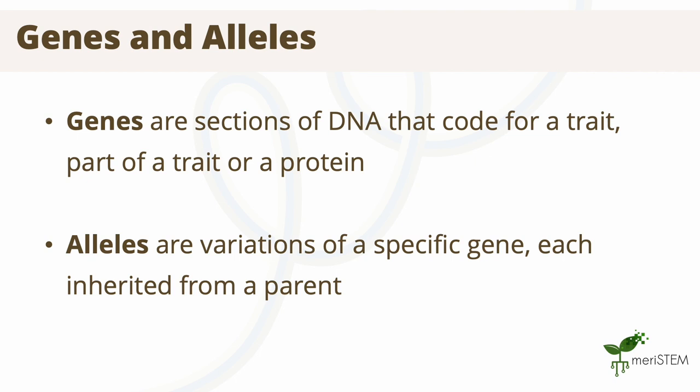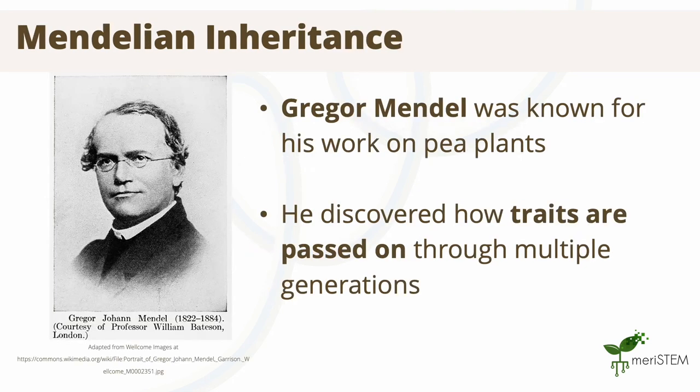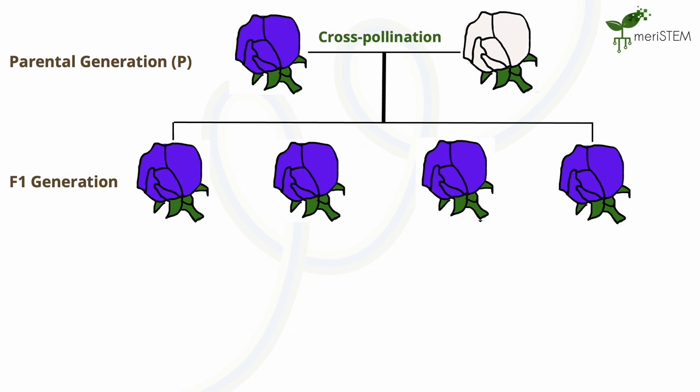The answer to this question was discovered even before we knew about the existence of DNA. One of the earliest findings on the inheritance and expression of genes was by an Austrian monk by the name Gregor Mendel. His work on pea plants showed how traits are passed on from one generation to the next. Mendel noticed that purebred purple flowering pea plants crossed with purebred white flowering pea plants resulted in a new generation of just purple flowers. He referred to the purple trait as being dominant over the white flowers, as they were the only ones expressed in this new F1 generation.